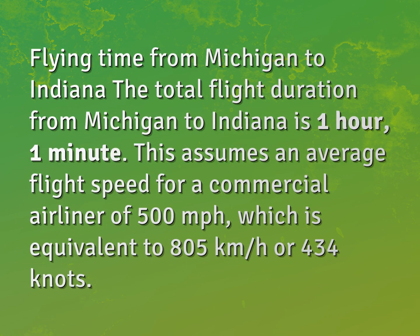Flying time from Michigan to Indiana: the total flight duration from Michigan to Indiana is one hour, one minute. This assumes an average flight speed for a commercial airliner of 500 miles per hour, which is equivalent to 805 kilometers per hour or 434 knots.